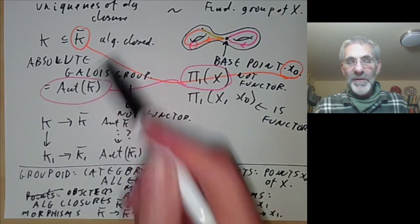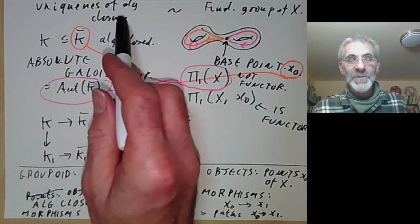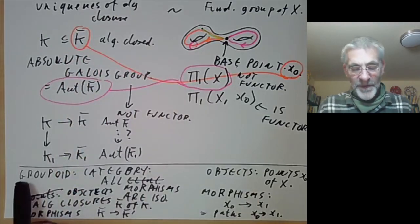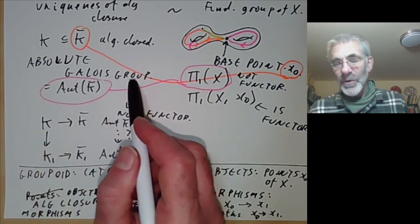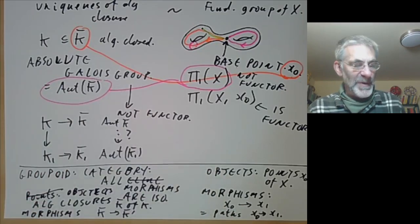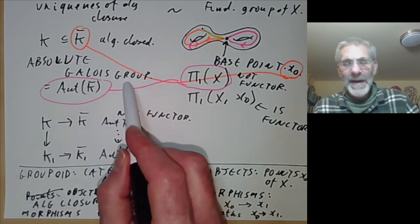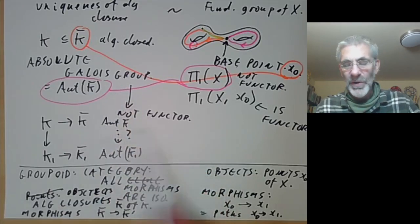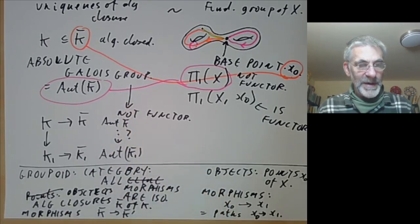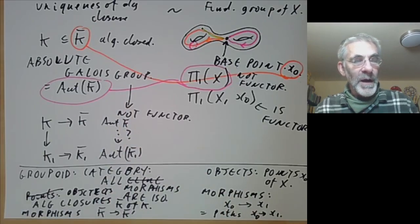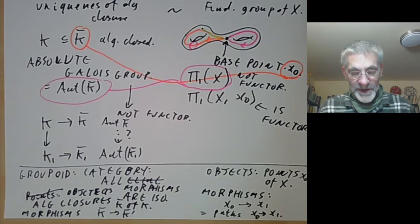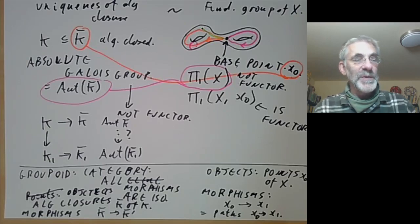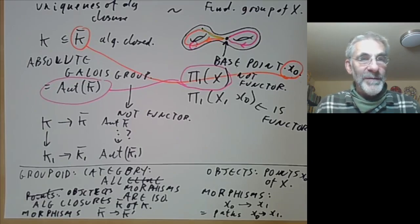If you're bothered by the lack of uniqueness of the algebraic closure, you need to find out what a groupoid is and work with the absolute Galois groupoid rather than an absolute Galois group. But most of the time you can get away with the absolute Galois group and not worry about this. Next lecture we're going to give another application of the splitting field, which is to construct the finite fields or Galois fields.